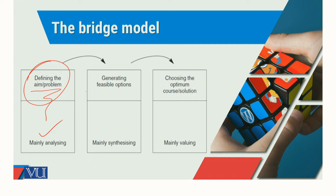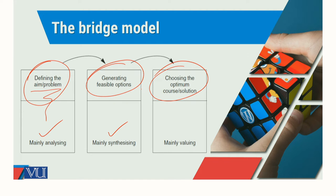After that, we are moving towards generating feasible options. In those feasible options, we combine different options and evaluate the evaluation criteria, or a parameter, or a perspective that we develop. That is basically involving our mind faculty of synthesizing things. After that, when you have to choose the best and optimum course of action, you are using the mind faculty of valuing. This is how analysis is linked with synthesis and with valuing.